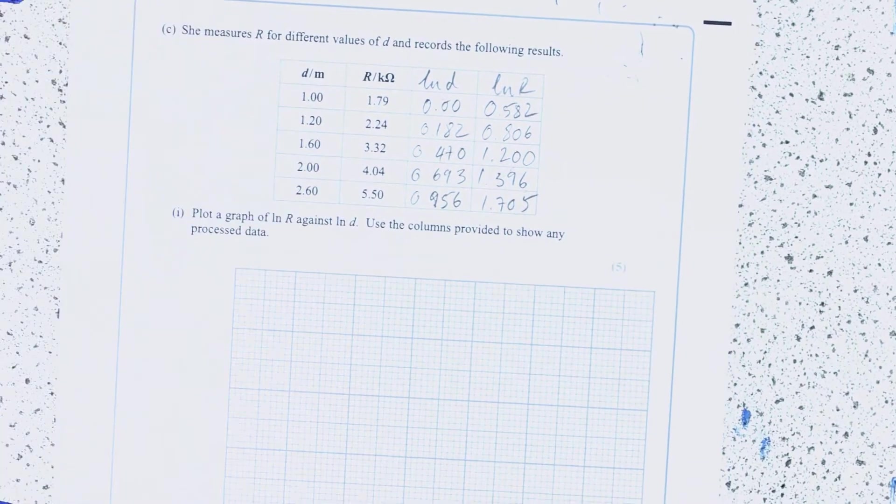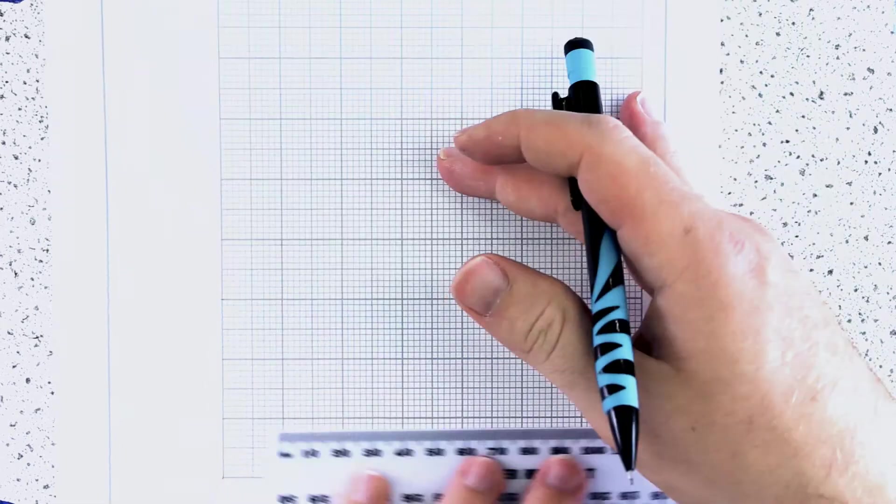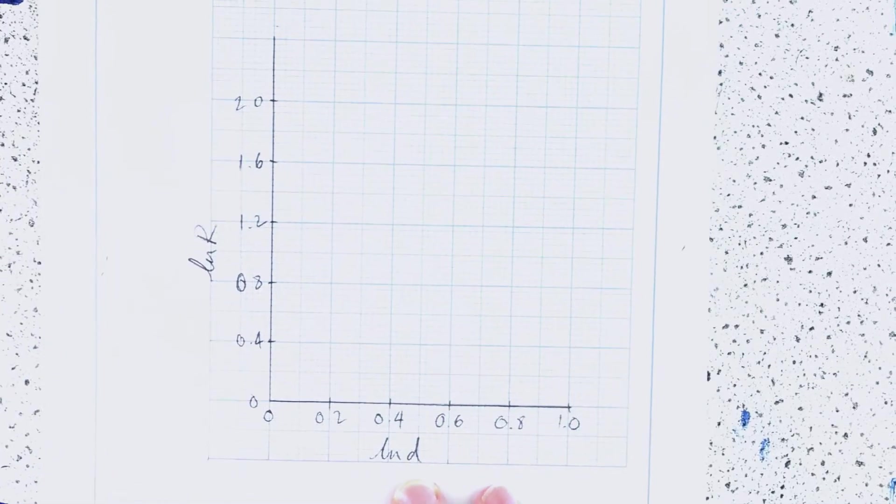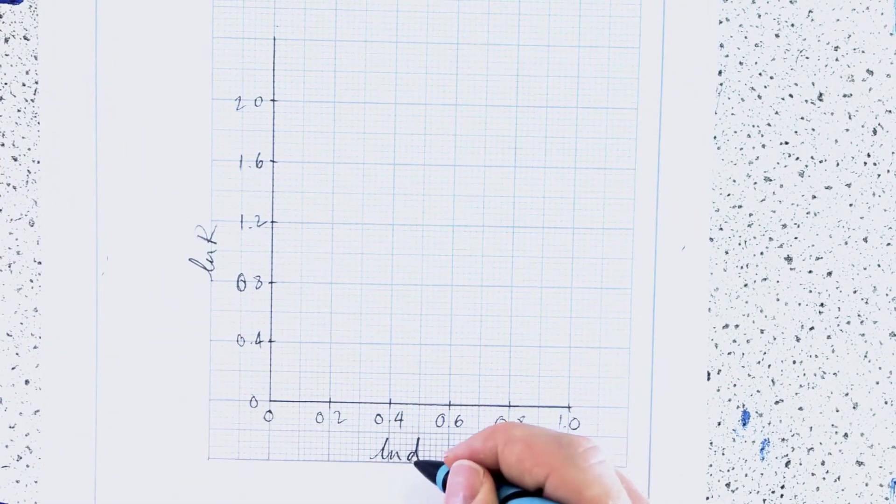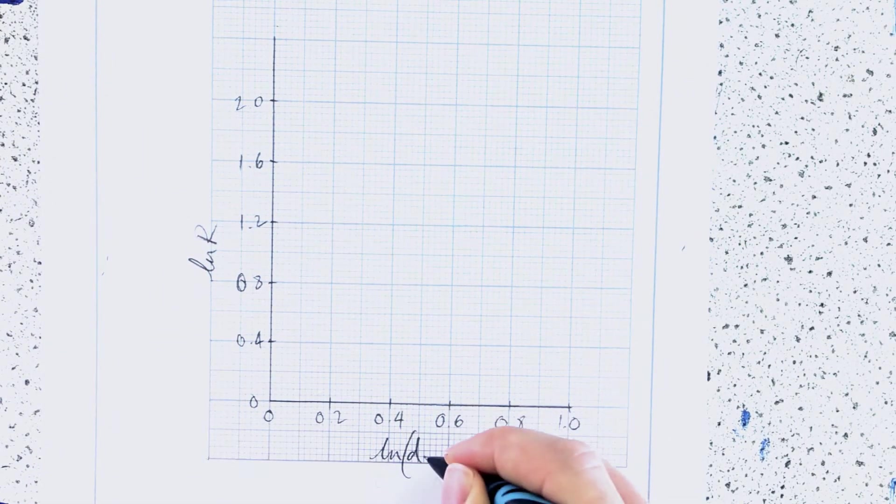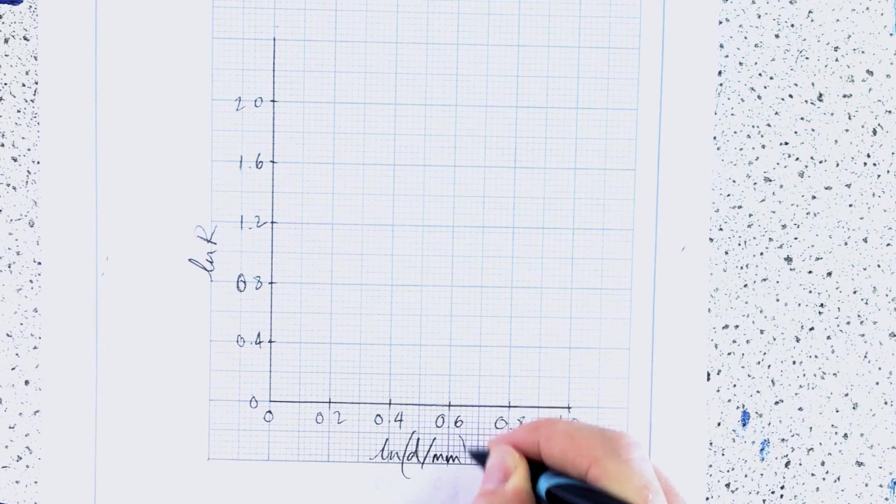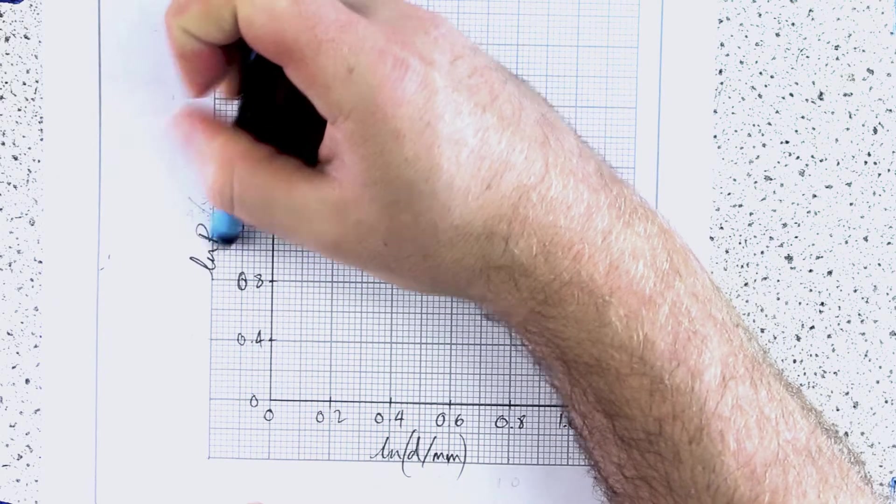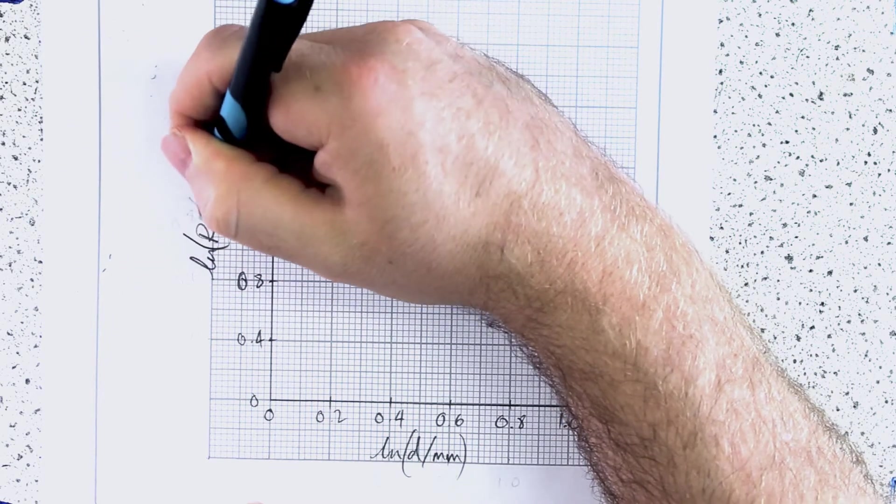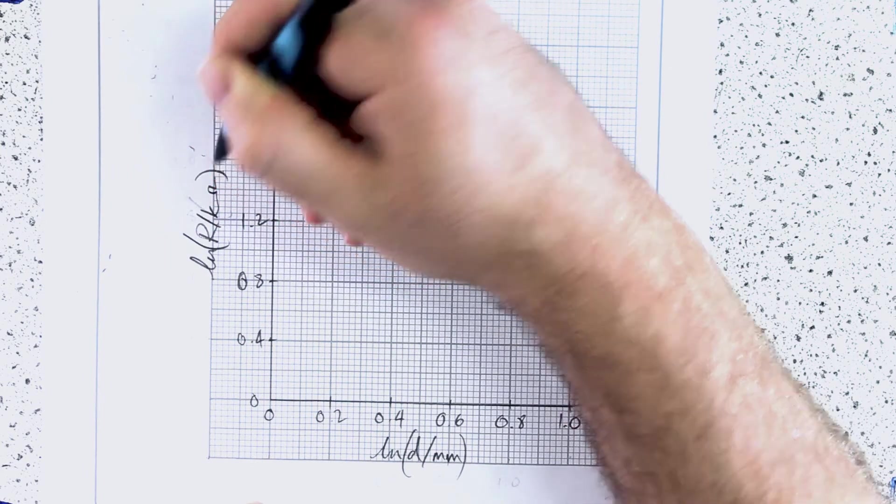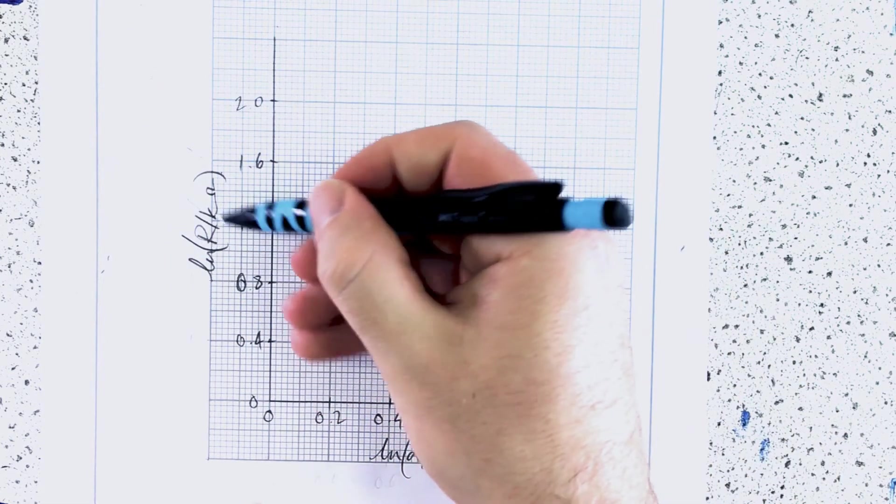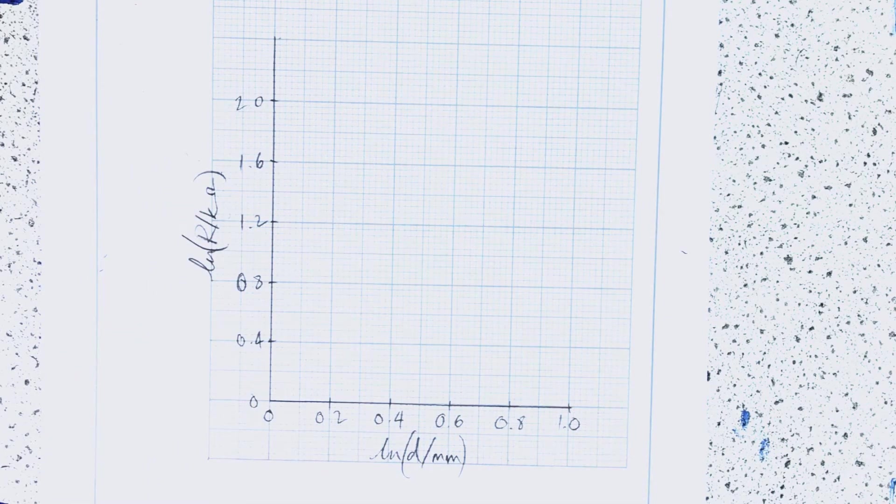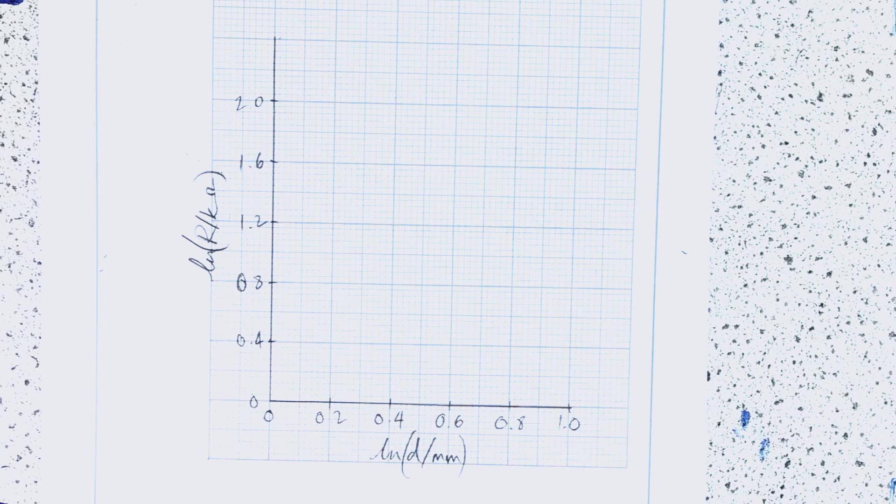So now I'll go ahead and plot. You can write Lun of D, which is in millimeters. You can write Lun of R, which is in kilo-ohms. So in other words, it's Lun of resistance. If I wanted to get resistance back, then I'd know my resistance was in kilo-ohms. And now I'm going to go ahead and plot my points.